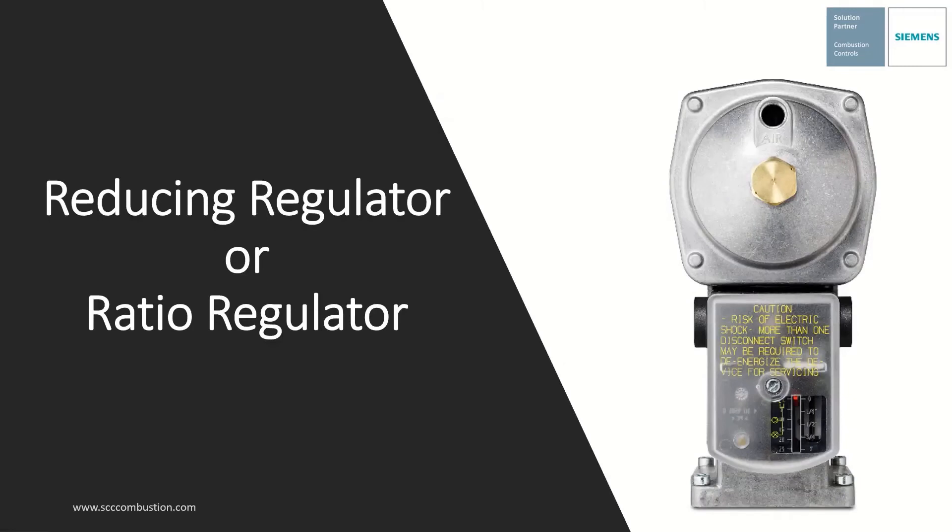The SKP25 is a reducing regulator or a ratio regulator. In the picture, you can see a round diaphragm at the top. You can see the port on the front is labeled air. This port is when being used as a ratio regulator. The gas sensing port is on the back. The brass plug is for the spring when being used as a reducing regulator or a bias spring for a ratio regulator.